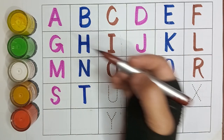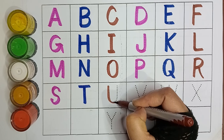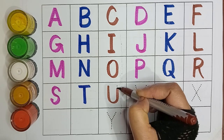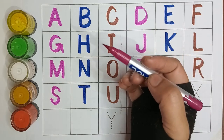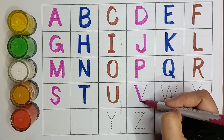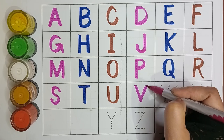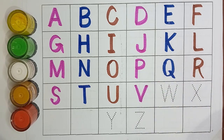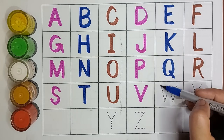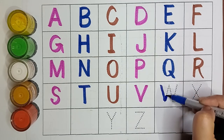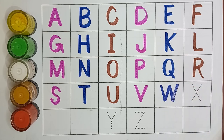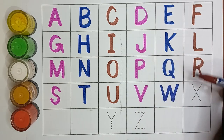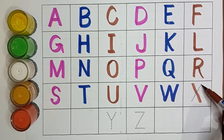Brown color. U, U for umbrella. U for umbrella. V, V for vine. Blue color. W, W for watch. W for watch. Brown color. X, X for...